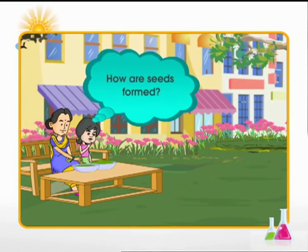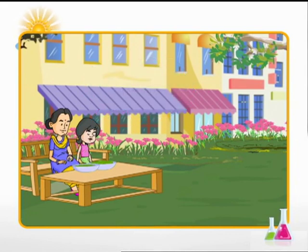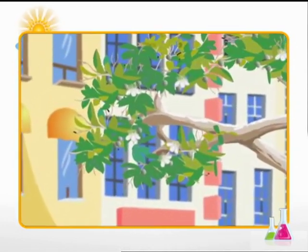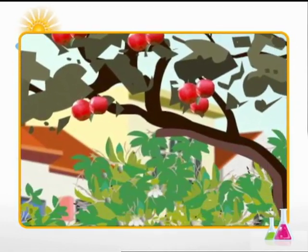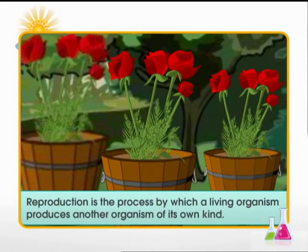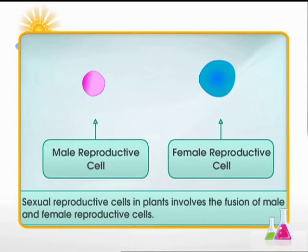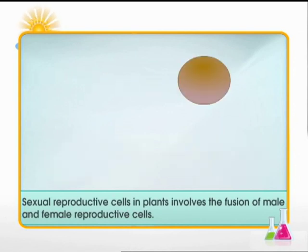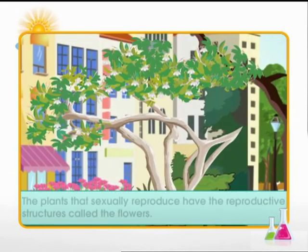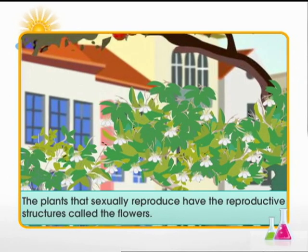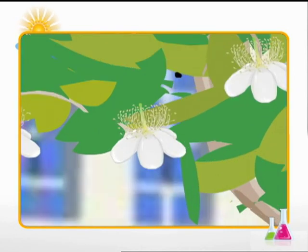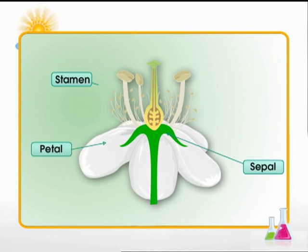The little girl must first know how seeds are formed. The ability to survive and ensure that a species carries on its lineage is the essence of life. Reproduction is the process where a living organism produces another organism of its own kind. Reproduction in plants can be sexual and asexual. Sexual reproduction in plants is a mechanism where male and female reproductive cells fuse. The plants that sexually reproduce have reproductive structures called flowers, which yield fruits and seeds subsequently. A typical flower has four main parts: sepals, petals, stamens, and pistil.